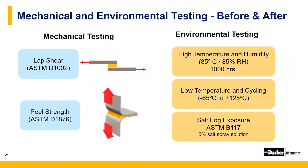Mechanical testing actually uses the adhesives and sealants attached to a couple different aluminum test panels that are pulled apart until the breaking point, per the specific test procedure. The force that's recorded at that break is measured and then recorded as the lap shear force.